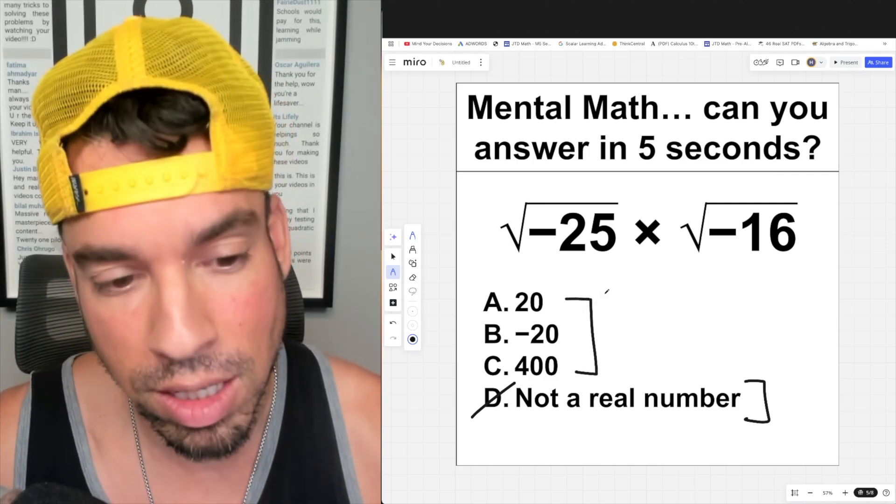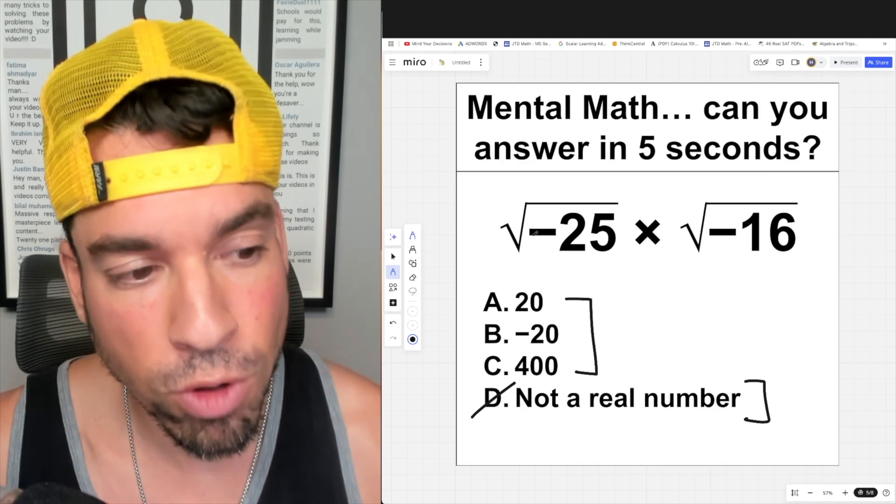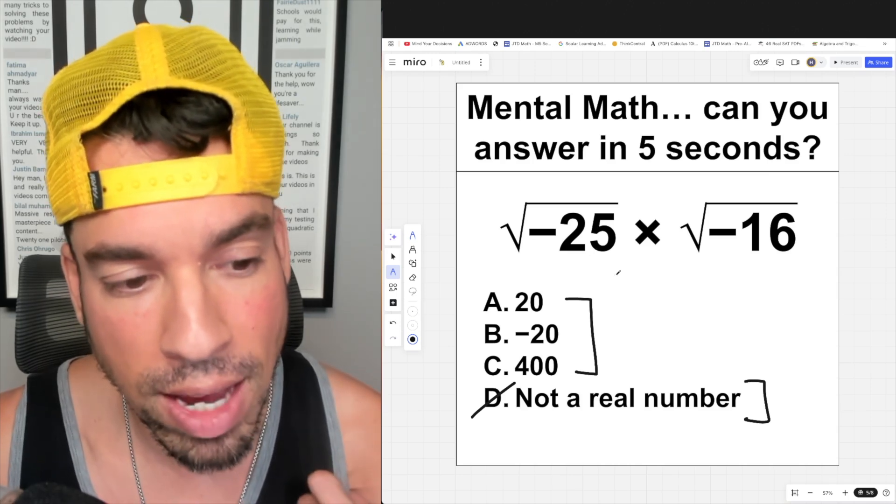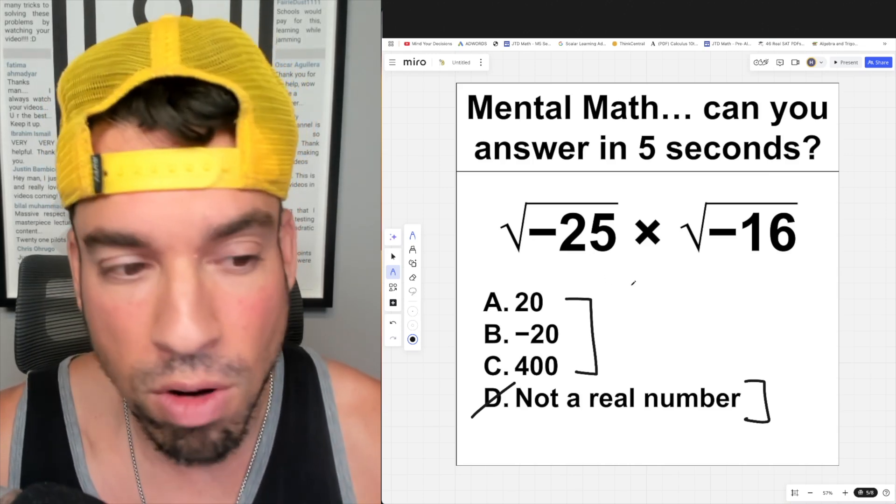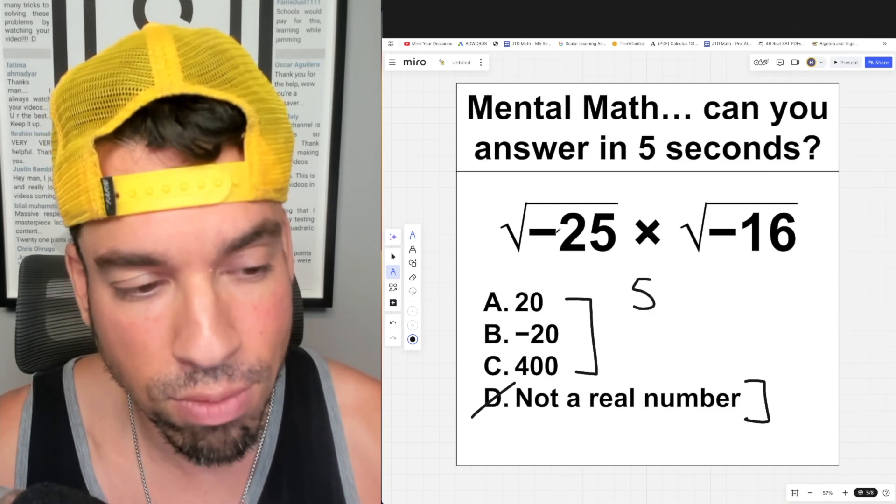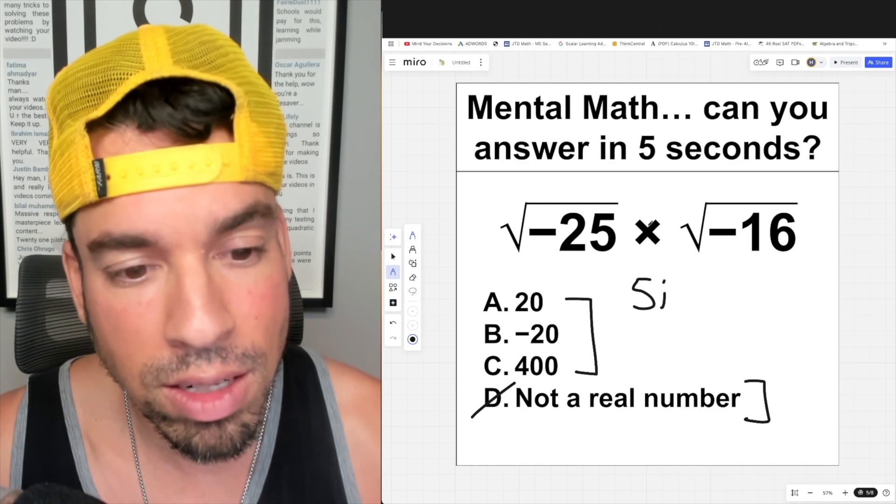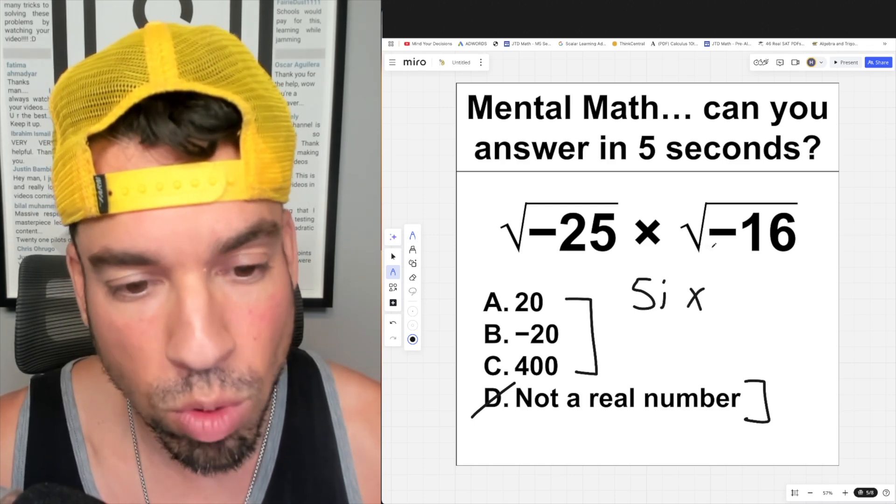Now I'm going to show you the correct way to do this. What you do is first you take the square root of negative 25, and that does have an answer that does involve an imaginary number. The square root of 25 is 5, and the square root of negative 1, which is multiplying 25, is i. Then we take this one right, what is the square root of negative 16? That is going to be 4 times i.